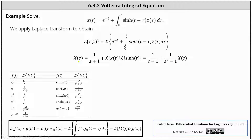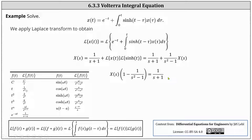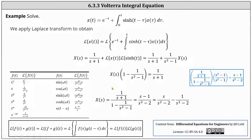And now we need to solve the equation for big X of s. The next step is to subtract the product involving big X of s on the right from both sides of the equation, and then factor out big X of s. This gives us big X of s times the quantity one minus one divided by the quantity s squared minus one equals one divided by the quantity s plus one. And now we divide both sides of the equation by one minus one divided by the quantity s squared minus one.